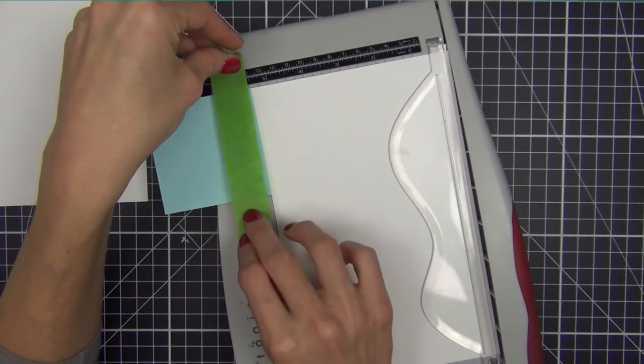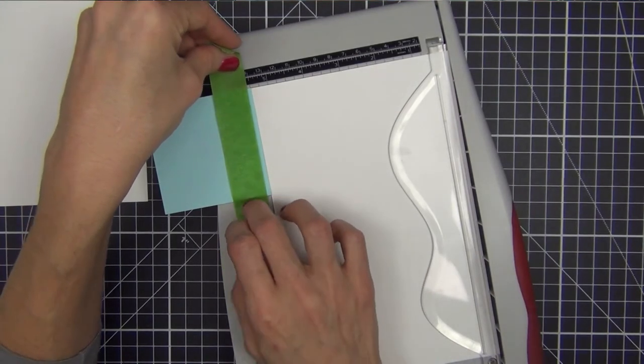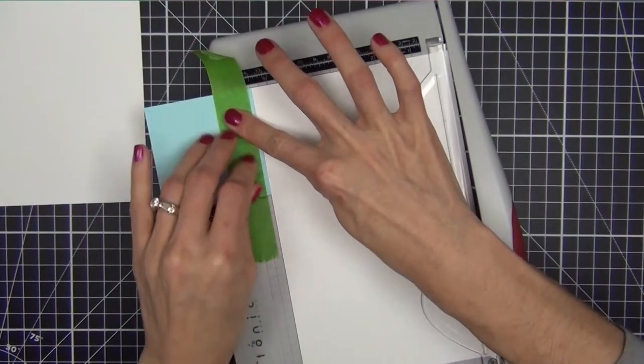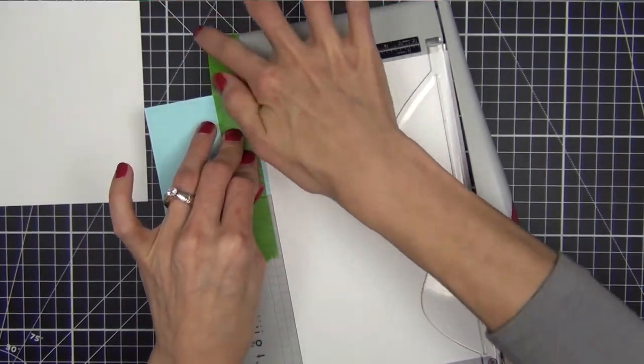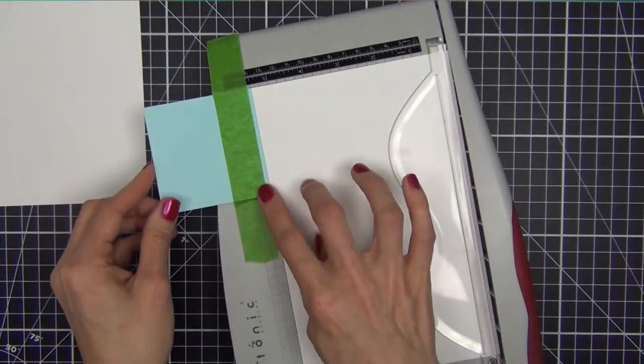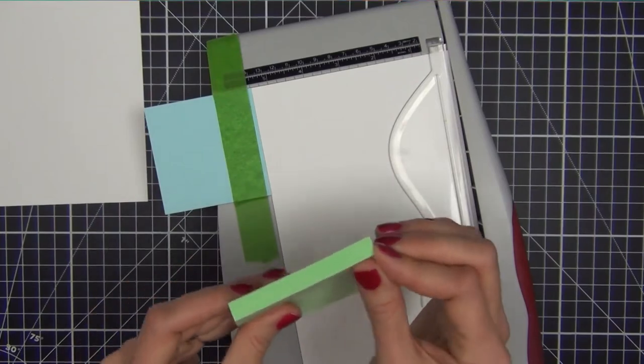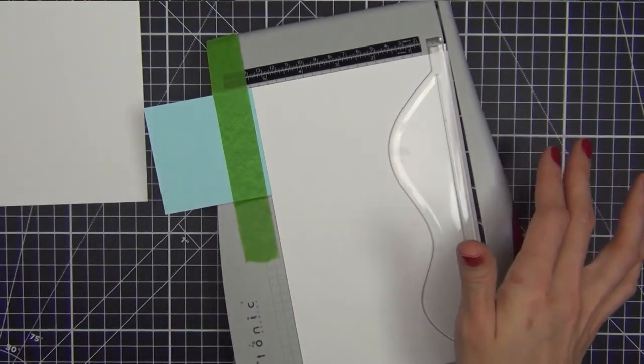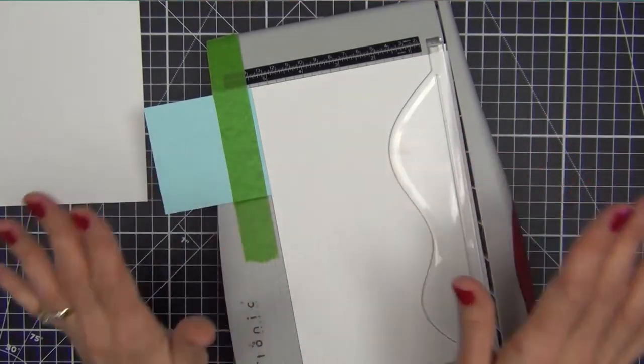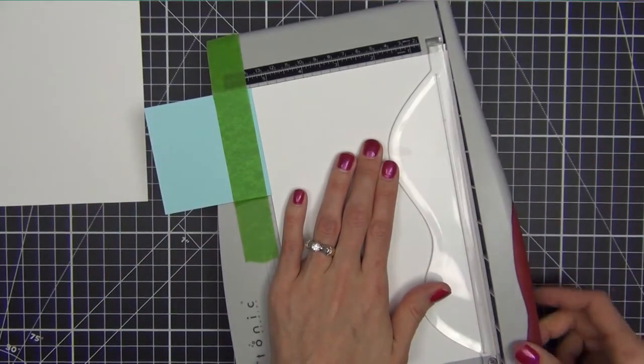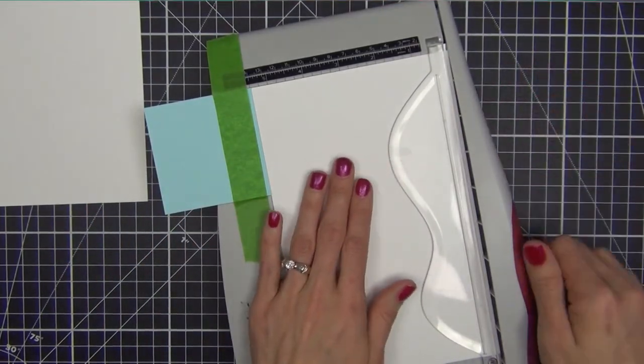So you take it and you put it right over the Post-it notes, making sure to really burnish it down well. Because the adhesive is sticky on the Post-it note, but it's very low-tack. So it easily shifts. And you don't want to do that because we're trying to keep everything the same. So that's butted up against there. Paper still looks good. Everything looks good.